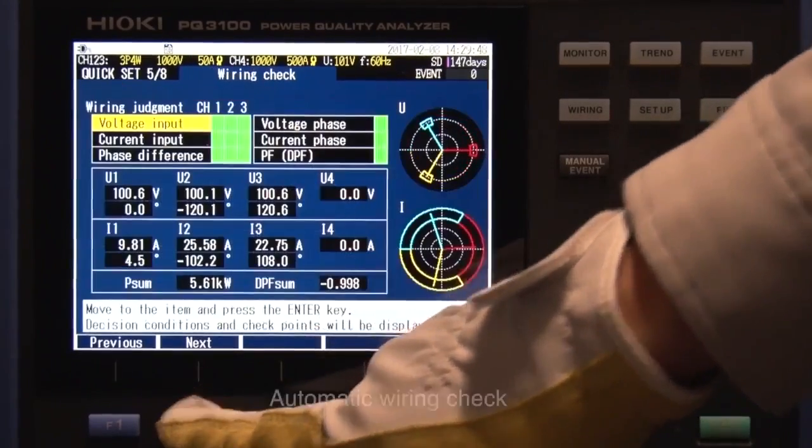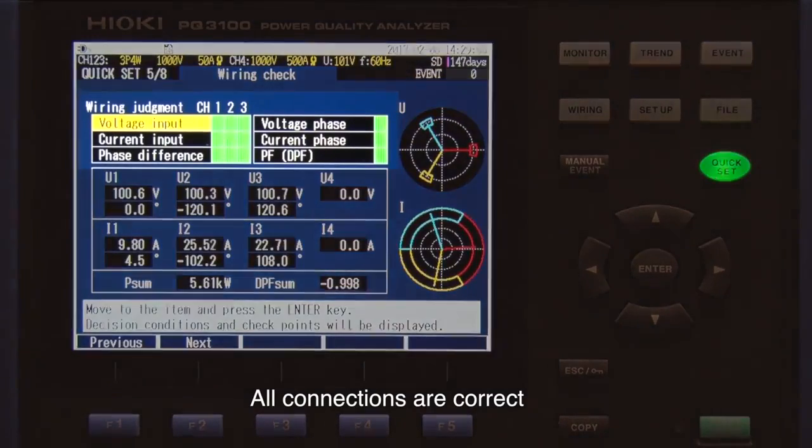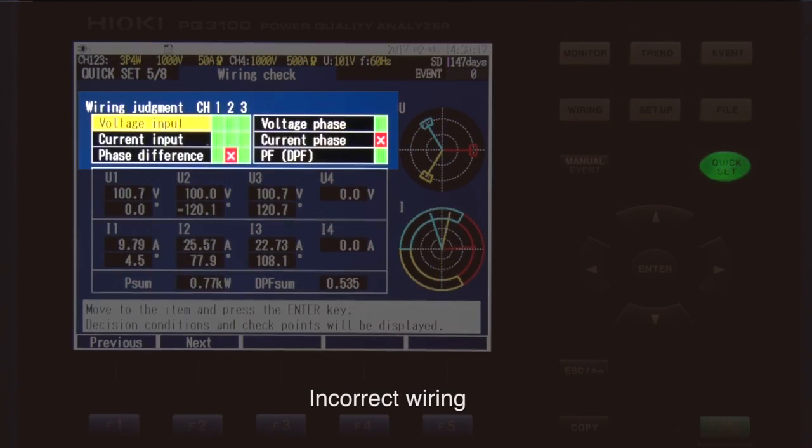The PQ3100 automatically checks for correct wiring and warns you if there is an error. This shows that all connections are correct. Incorrect wiring is indicated in red. Yellow signals that you should double-check the wiring.